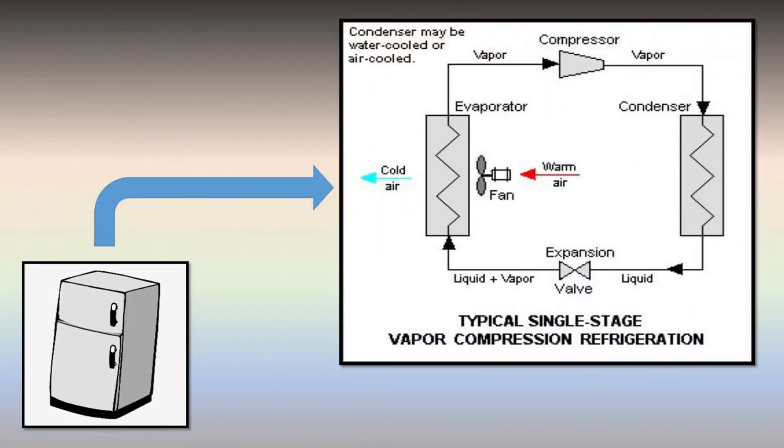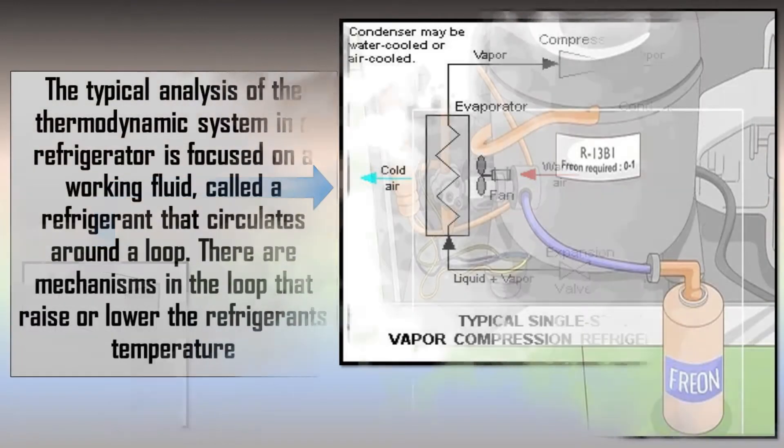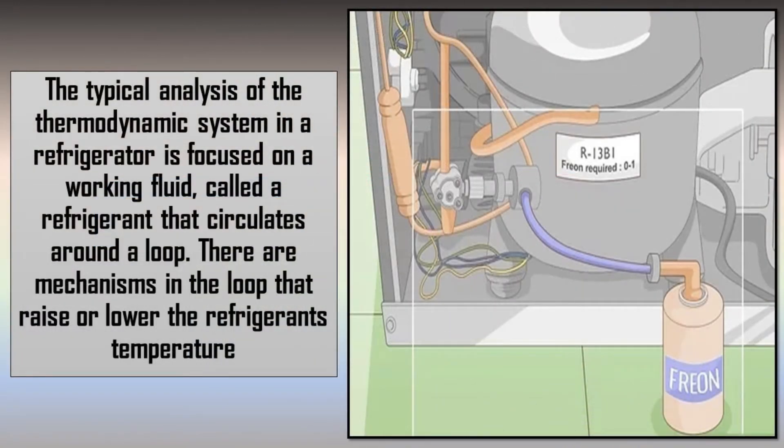It may sound hard, but actually, we see this process almost every day because there is a practical application of this process. One of the most famous application is the refrigerator. The typical analysis of the thermodynamic system in a refrigerator is focused on a working fluid called a refrigerant that circulates around the loop. There are mechanisms in the loop that raise or lower the refrigerant's temperature.